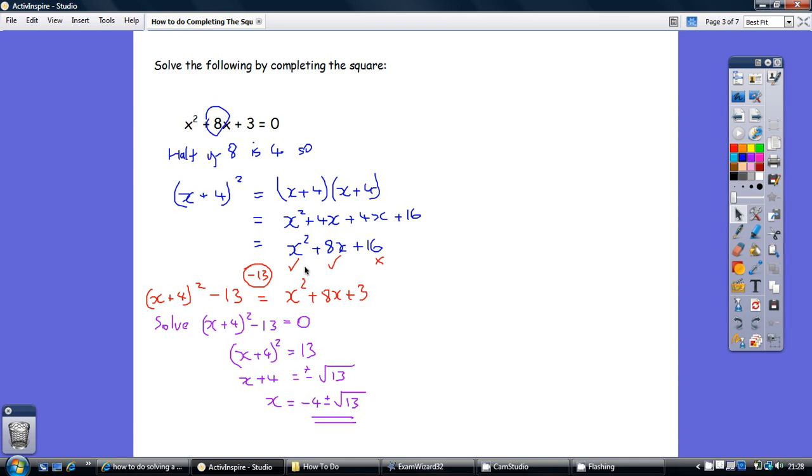Now, that's sort of two-thirds of the way there. You've got the x squared right, you've got the 8x correct, but we've got 16. We don't want 16, we want plus 3. So, what adjustment do we have to do? We have to take away 13. So, if we take away 13 from both sides, we get x plus 4 all squared minus 13 equals x squared plus 8x plus 3.